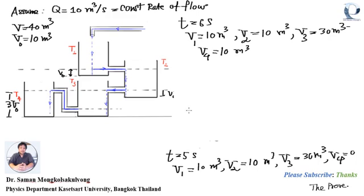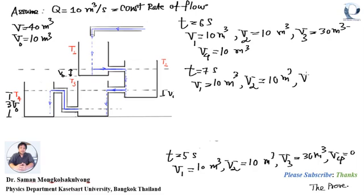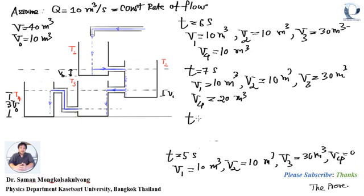At t equals 7 seconds, V1 is equal to 10 mq, V2 is equal to 10 mq, V3 is still equal to 30 mq, and now V4 is equal to 20 mq. The water will fall from the high level to the lower level.